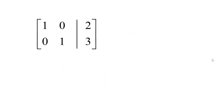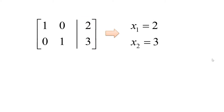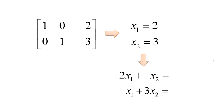Next, and probably the most enjoyable part: you can simply read off the numbers on the right side of the vertical bar as solutions, which gives x1 equals 2 and x2 equals 3. To ensure you got the right solutions, you can plug x1 equals 2 and x2 equals 3 back into the system of linear equations. If you get 7 from the first equation and 11 from the second equation, your calculations were perfect.